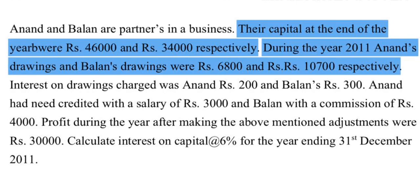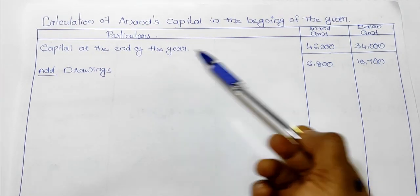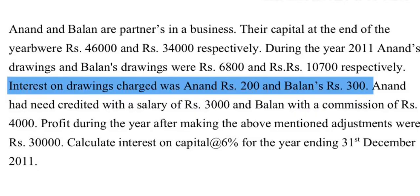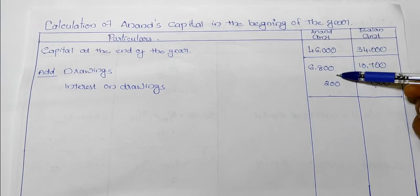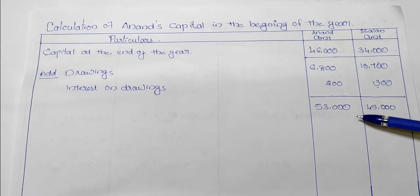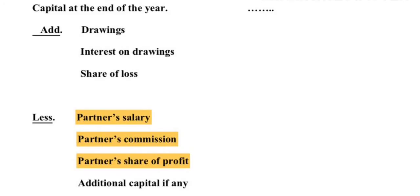For the next item, it will be $100 drawings, then $17 drawings. We will add these two items. For the next item, we record the interest on drawings. The interest on drawings is $20. We will also add $50 and $40, and then the item will be deducted.